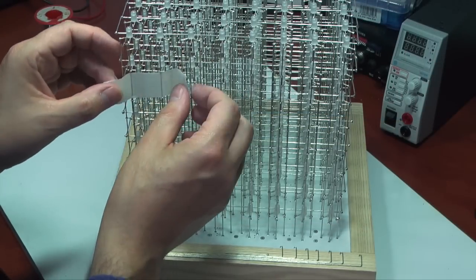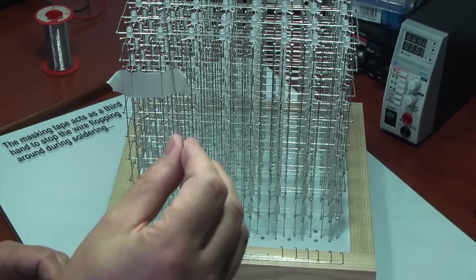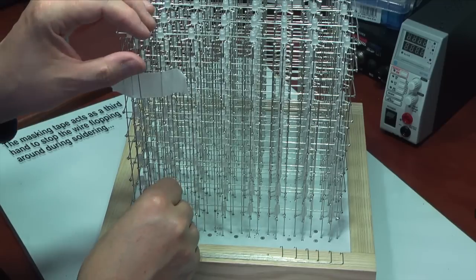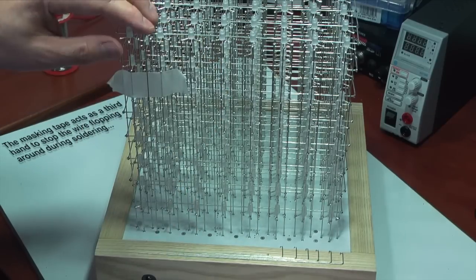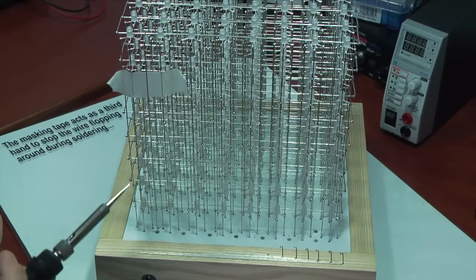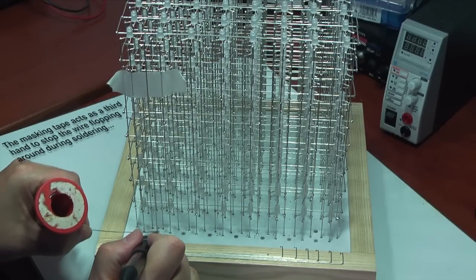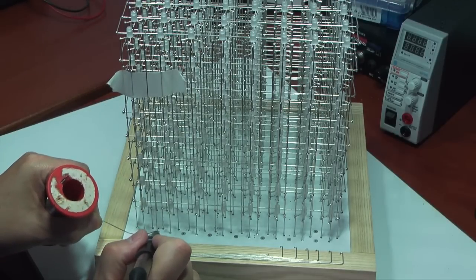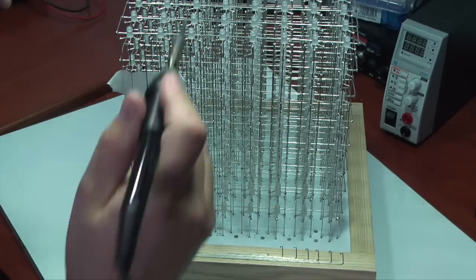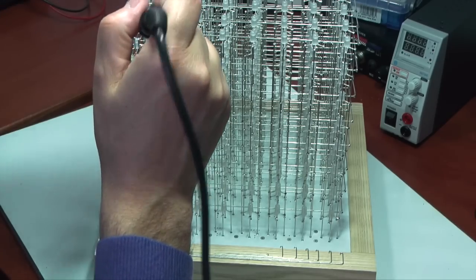When I first tried to fit these wires in, they flopped around and it was like I needed a third hand to hold them in place while I soldered them. What I did was get some masking tape and apply a short length of it across the two adjacent cathodes with the sticky side facing away. The tension of the tape and the friction on the non-sticky side was enough to hold the link wire in place while soldering.